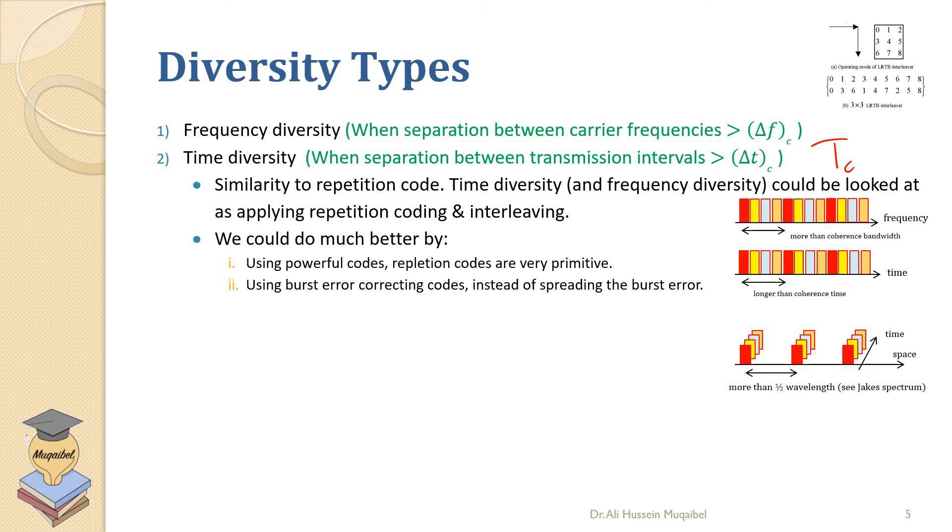An example of using time diversity is repetition code. Repetition code is where you send the data or you send the bits multiple times. You just repeat yourself.